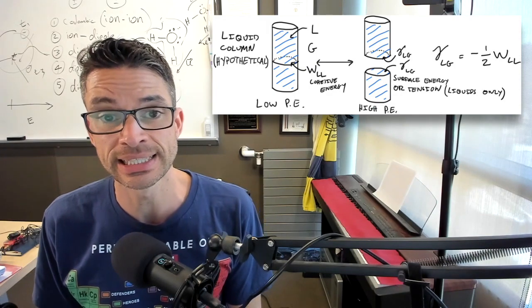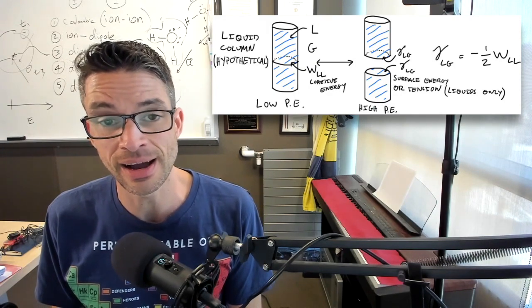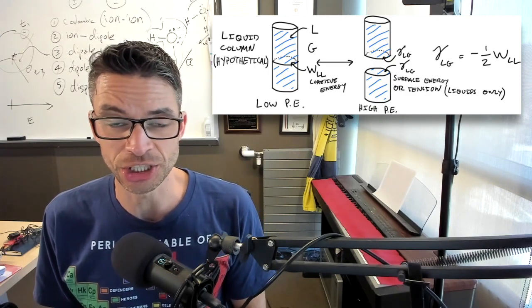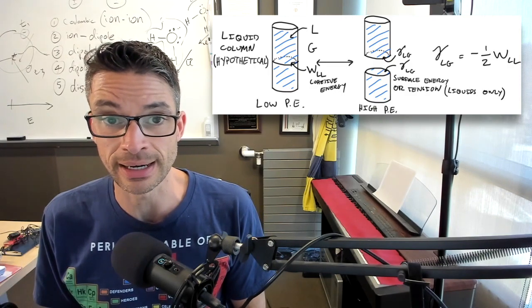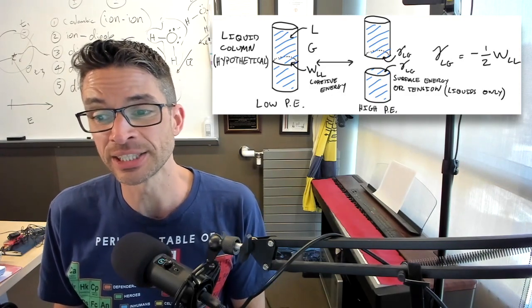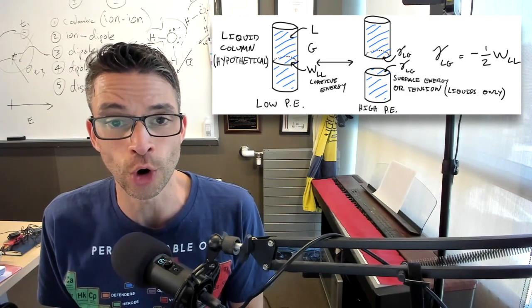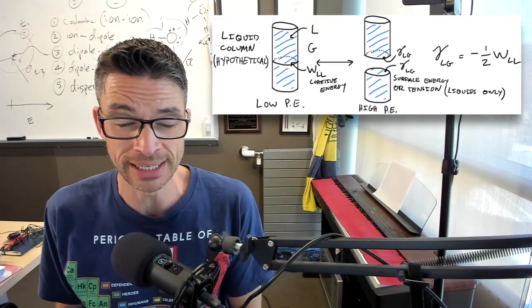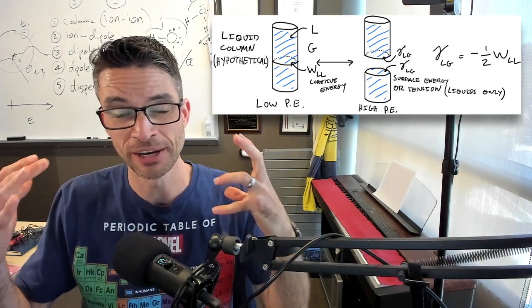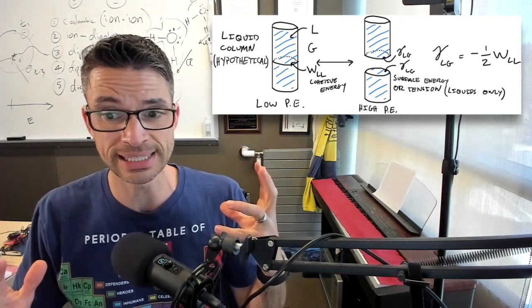And you pluck it apart into an exactly planar surface. That planar surface is going to have two times the surface energy of each one of those surfaces.